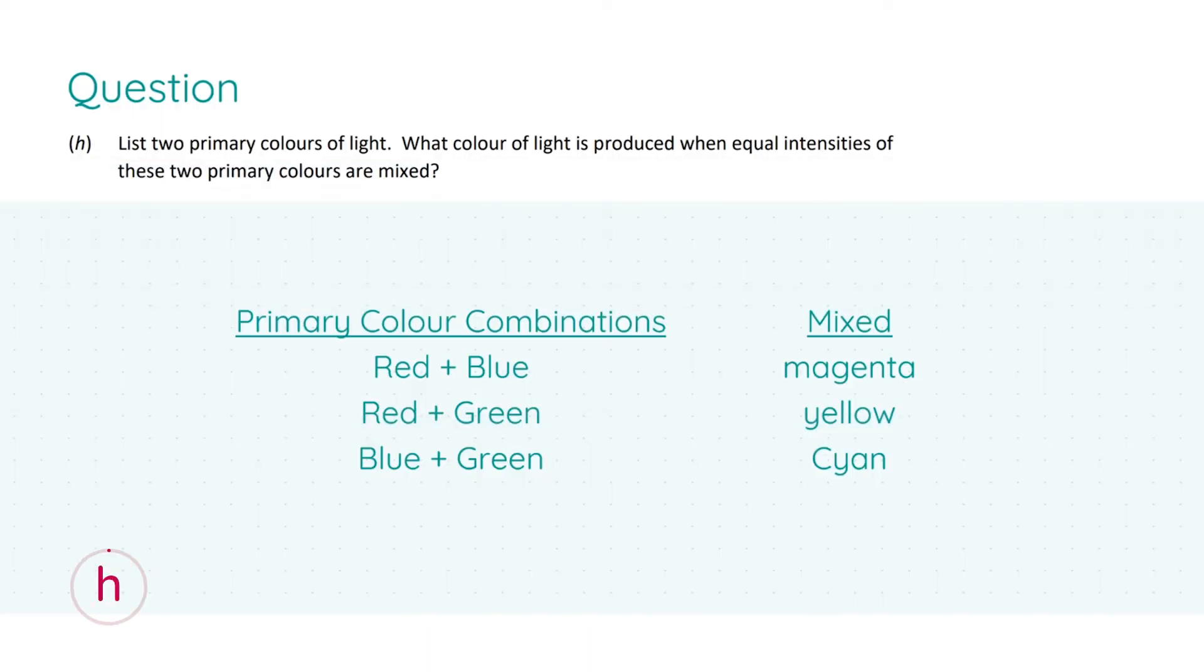Part h: we're asked to list two primary colors of light and from this determine what color of light is produced when equal intensities of these two primary colors are mixed. I've drawn out a table. So we have three primary colors: red, blue and green, and therefore three combinations of these two.